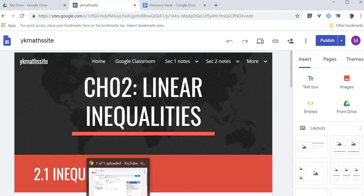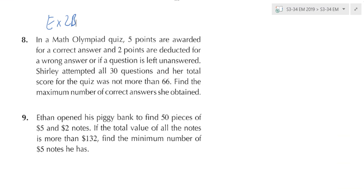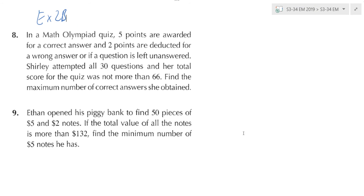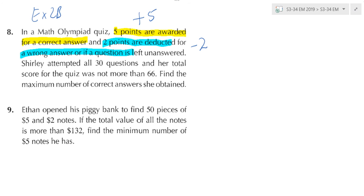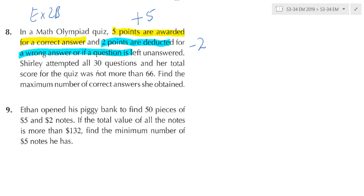So we are going through the Linear Inequality textbook question. In this quiz, 5 marks are awarded. Can you write down? This one means plus 5, minus 2. Now attempt 30 questions. Total score is 66. Maximum number of correct answer.